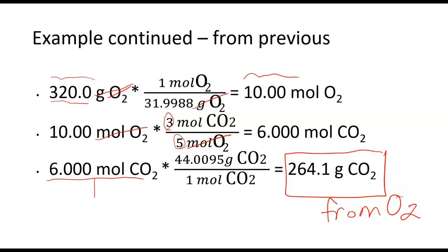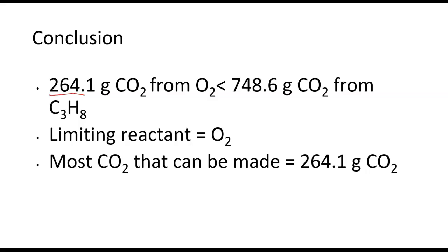So now we're gonna compare. We could make 264.1 grams of CO2 from the oxygen, or we could make 748.6 grams of CO2 from C3H8. 264.1 is less than 748.6, so the most that we could make is 264.1. We can't make more than that because we run out of O2. Since O2 is what we run out of, O2 is our limiting reactant. So the most CO2 that we can make is 264.1 grams of CO2.